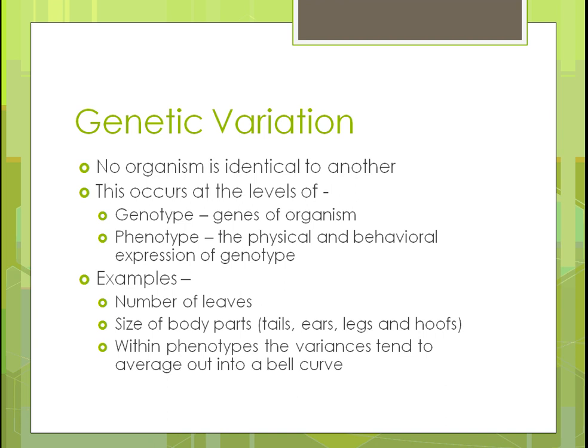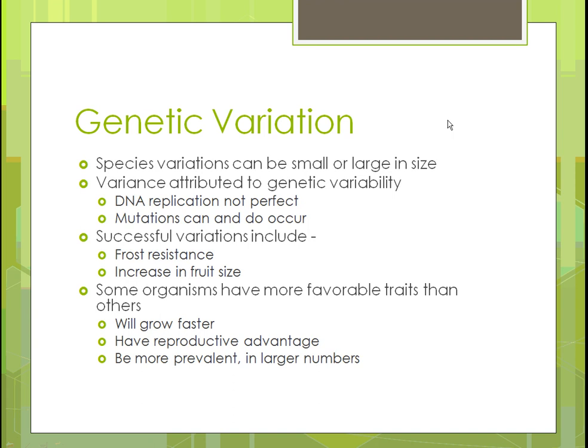Species variations can be smaller or larger, and it tends to be that the larger the number of a species, the more variation you're going to have. What drives this variation is how DNA replicates — and it doesn't always replicate perfectly. There can also be mutations, just like in humans where babies are sometimes born missing body parts or with deformities.